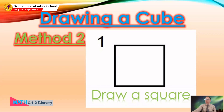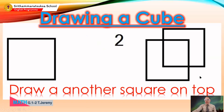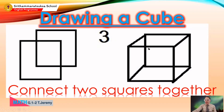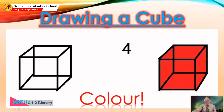Here's another way to draw a cube — method two. First, draw a square, then draw another square on top so the corners of the two squares overlap. Then connect the two squares together by drawing two lines on the top and two lines on the bottom. The last step is to color it.